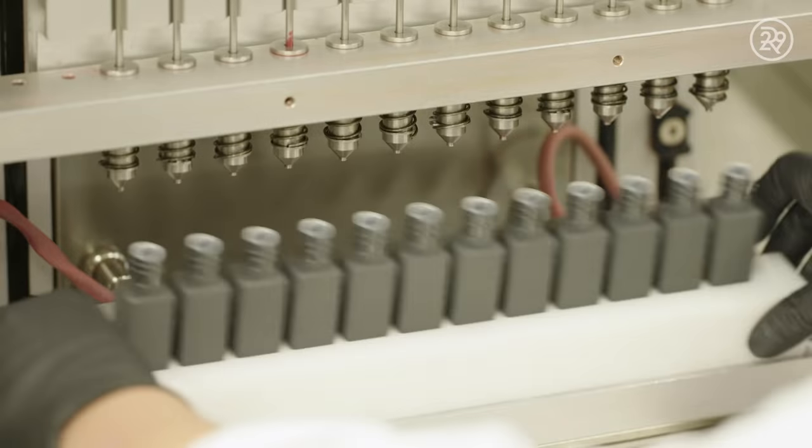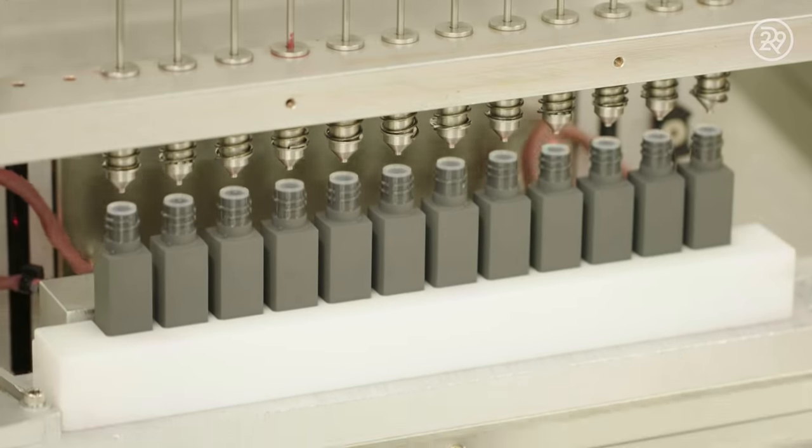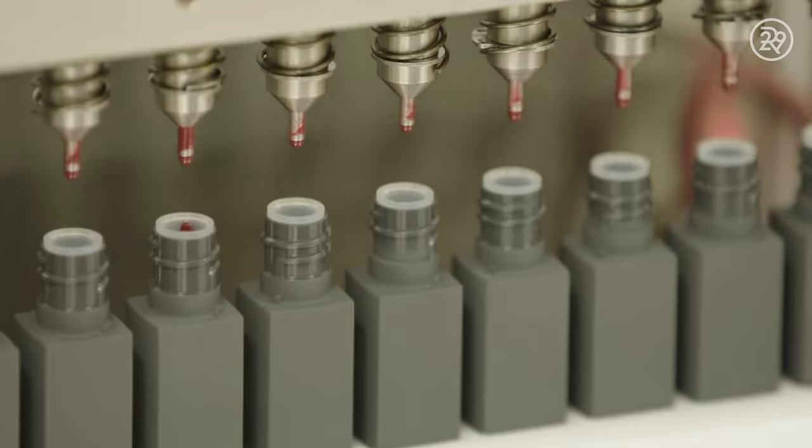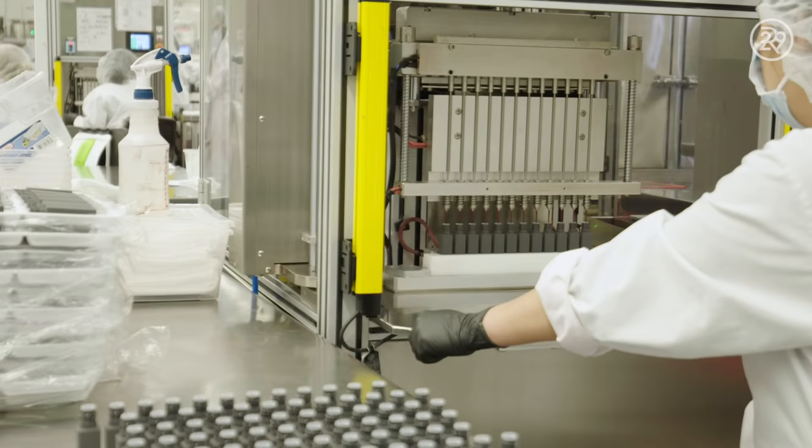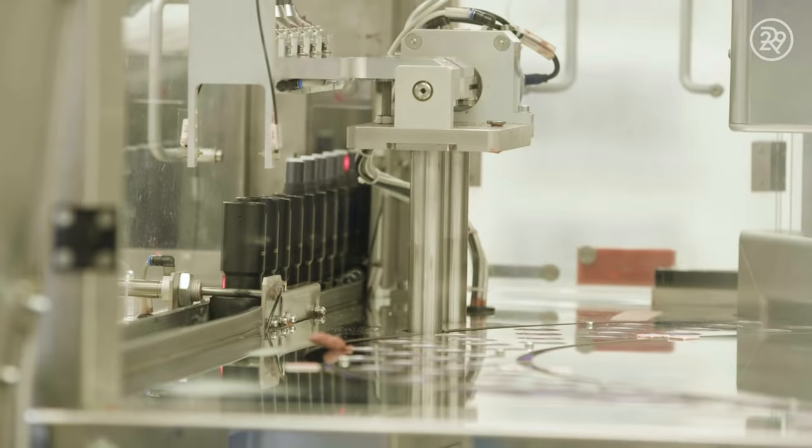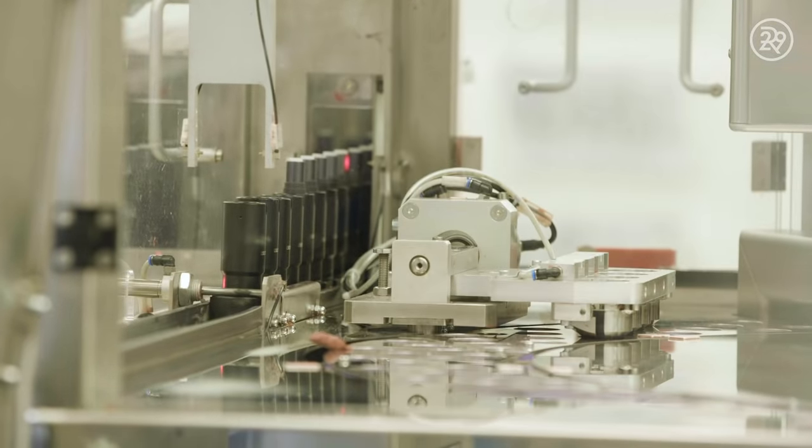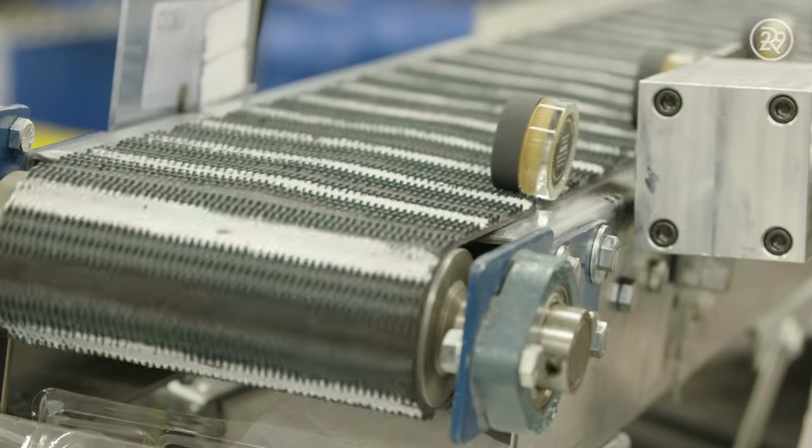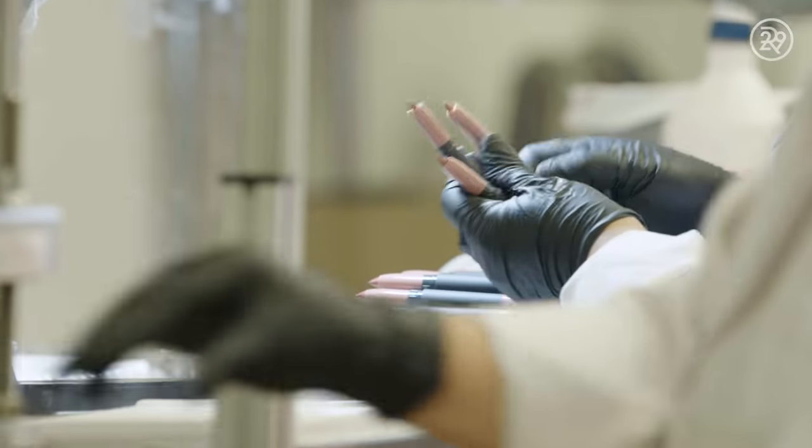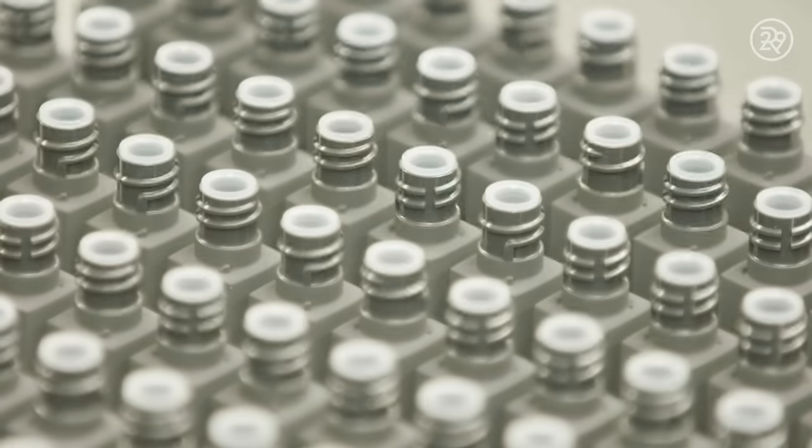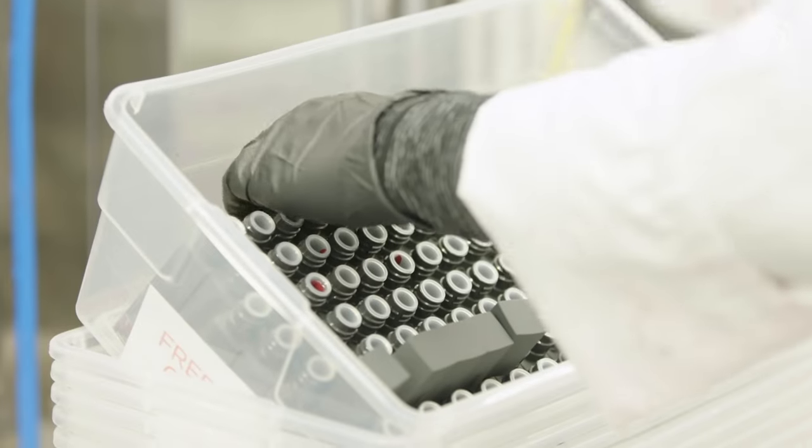The final mixture is fed into this machine, which fills up 12 bottles at a time. The final formula is kept warm in the suspended kettle, and the precise weight desired is dispensed into the tubes. Over the course of a day, over 10,000 tubes of liquid lipstick are filled.